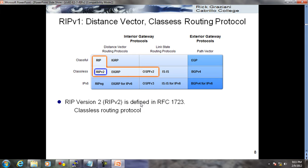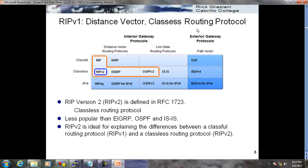RIP version 2 is the same category as RIP version 1 - a distance vector routing protocol - but it is a classless routing protocol. It is less popular compared to EIGRP and OSPF. The other features are all the same: hop counts, periodic updates, hold-down timer, invalid timer - everything is the same. The only difference is it supports CIDR, VLSM, and classless routing.